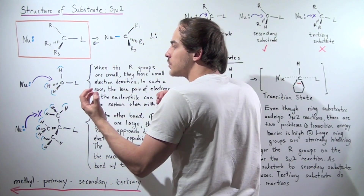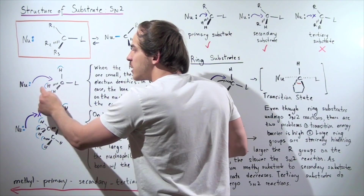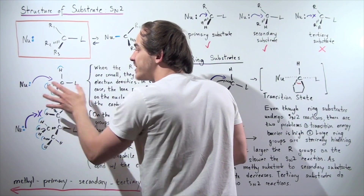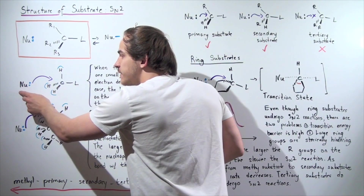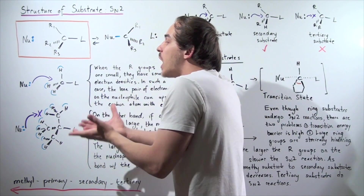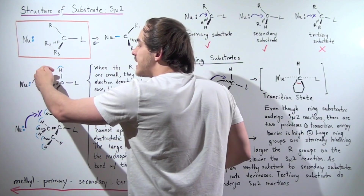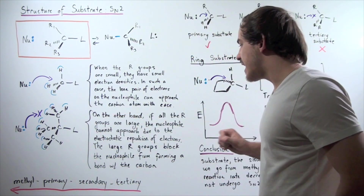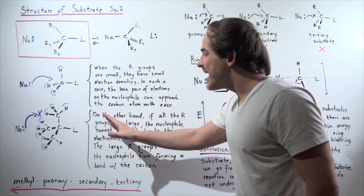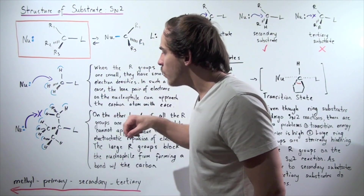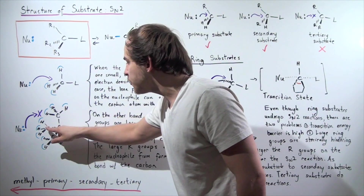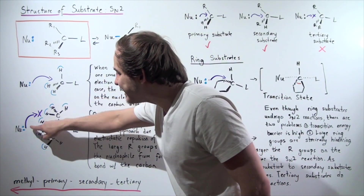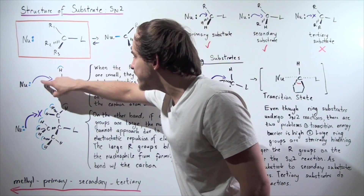So when these electrons get close to these electrons, they will repel one another. If these groups are large, there will be a lot of repulsion. But if these electron densities are small, this nucleophile — these two electrons — will have no problem getting to this carbon atom and forming our bond, kicking off our leaving group. On the other hand, if all the R groups are large, we replace all these R groups with methyl groups, and notice how much more electron density we have — nine in this case, and only three in this case.